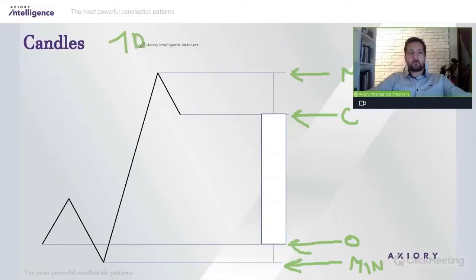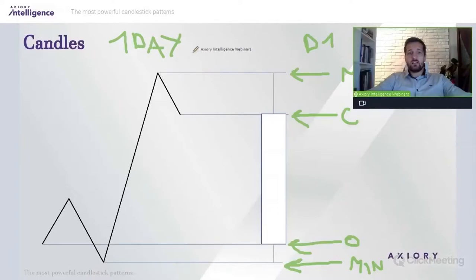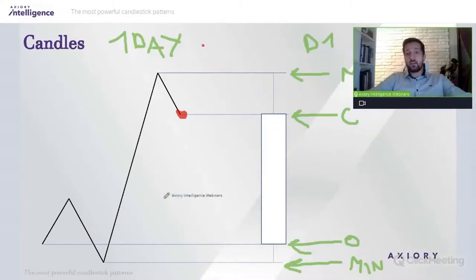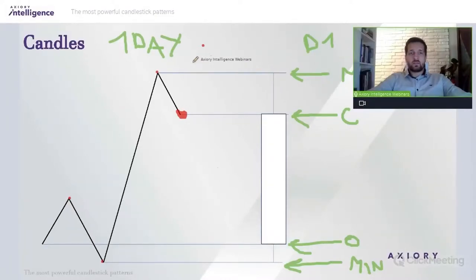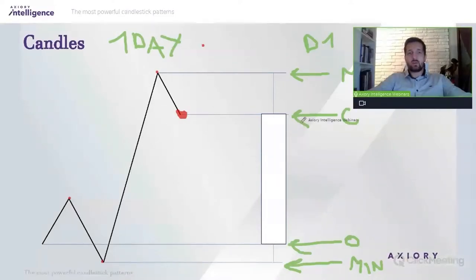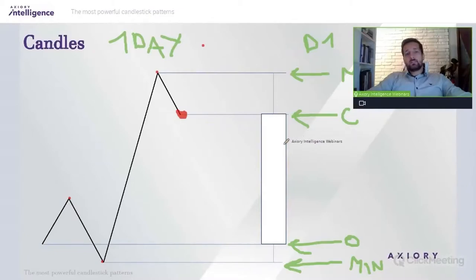For example, this is one daily candle. On a daily chart, if that were a line chart you would receive only one point — the close price for the whole day. But on a candlestick chart you have four prices instead of just a point: open, close, maximum, and minimum. Every candle consists of these four prices.